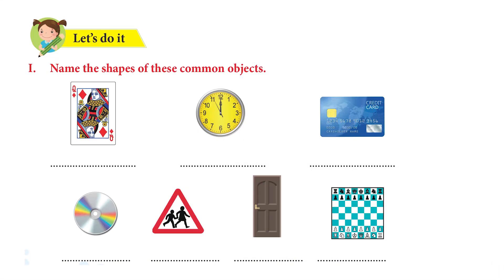Let's look at the activity given in unit 4, page 78. Here we have an activity that says: name the shapes of these common objects. The first one is a playing card. What shape do you think it is? It is a rectangle. And the next one is a wall clock. What shape is that? It is a circle.